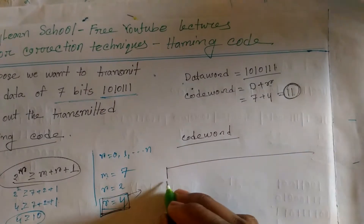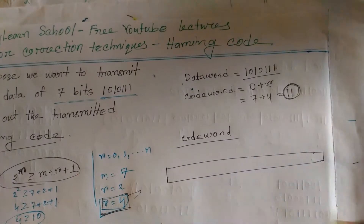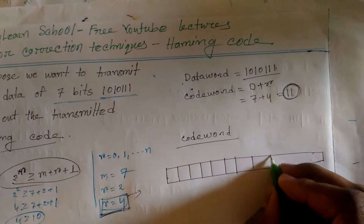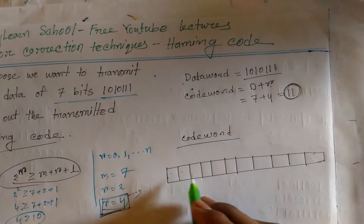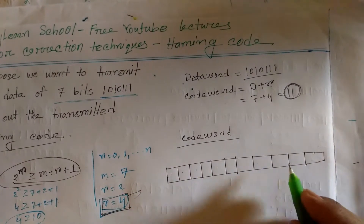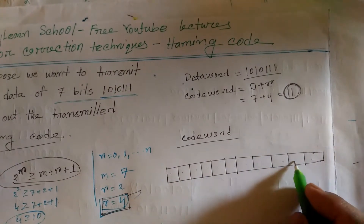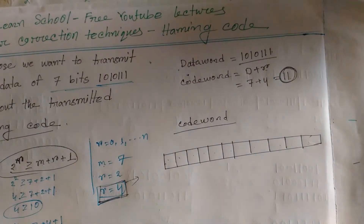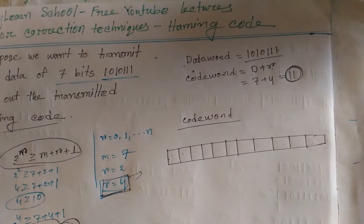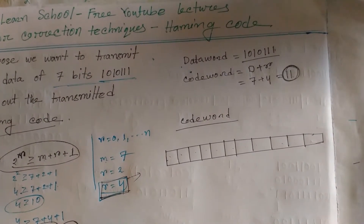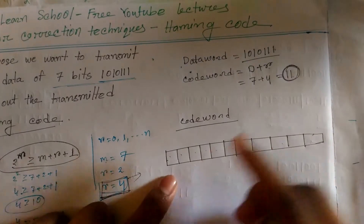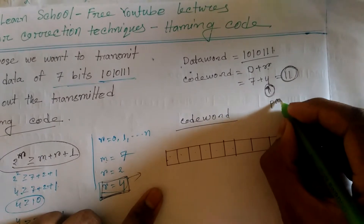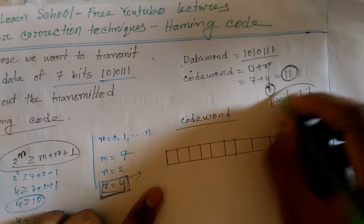I will write the first one. Positions 1, 2, 3, 4, 5, 6, 7, 8, 9, 10, 11. Code word is 11 bits. The parity bit positions are identified — P-A-R-I-T-Y — it is the parity bit.